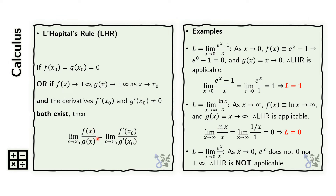It can also be the case that the numerator approaches positive or negative infinity and the denominator approaches positive or negative infinity as x approaches x sub o. If any of those conditions are met, then we can apply L'Hôpital's rule. L'Hôpital's rule says that the limit of this quotient, so long as the conditions are satisfied, can be obtained by taking the limit as x approaches x sub o of the derivative of the numerator divided by the derivative of the denominator.